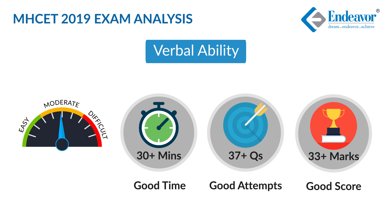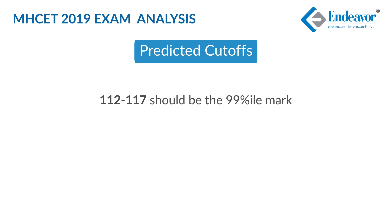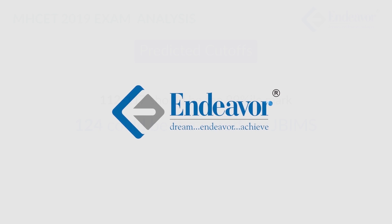5 minutes should be given to mark all unattempted questions, as MHCT has no negative marking. Overall, a student scoring around 112 to 117 should reach about the 99th percentile. The cutoff for JBIMS this year could go as low as 124. We wish you luck for all your future and upcoming endeavours. Thank you.